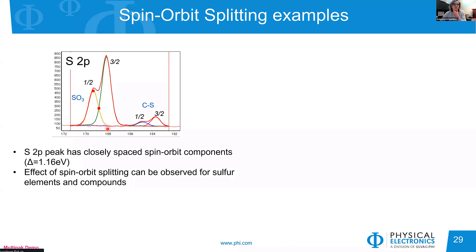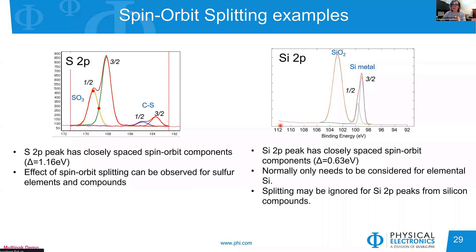For sulfur 2p, we have closely spaced spin-orbit components with a separation of 1.16 eV. We know the ratio of the peaks and that spin-orbit splitting affects both sulfur elements and compounds. So we should fit the sulfur 2p spectrum using doublets with area and separation constraints. For silicon 2p, on the other hand, the separation is smaller and typically we need to account for spin-orbit splitting only for the metal component — it can be ignored for compounds.